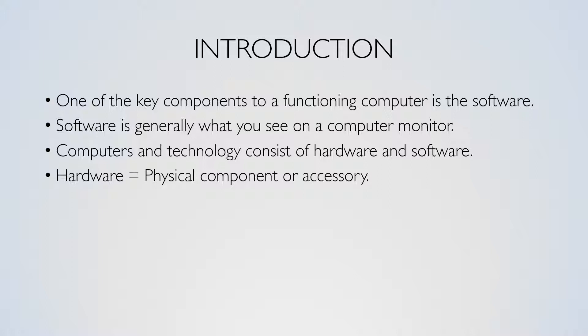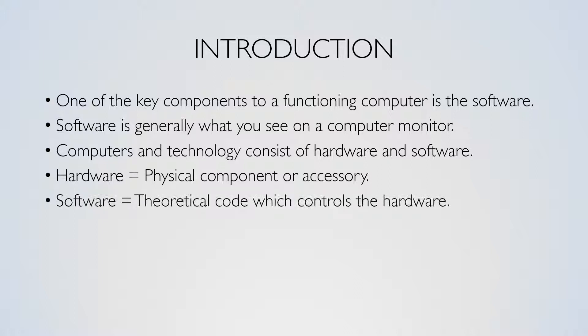Computer software is what ends up being seen as an operating system or program on a computer monitor, or as a background process. While we generally tend to refer to software as specific to computers, we also see software in a wide range of devices, such as firmware in fridges, radios, cars, and other devices.